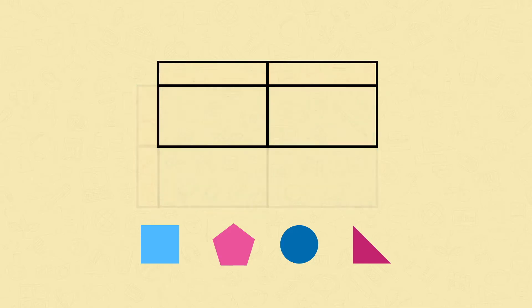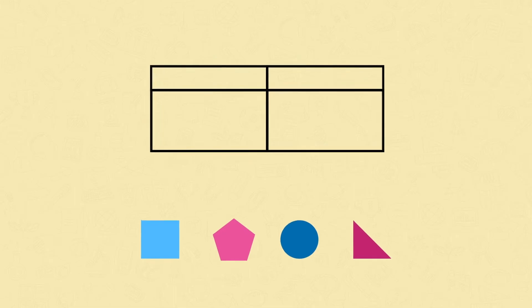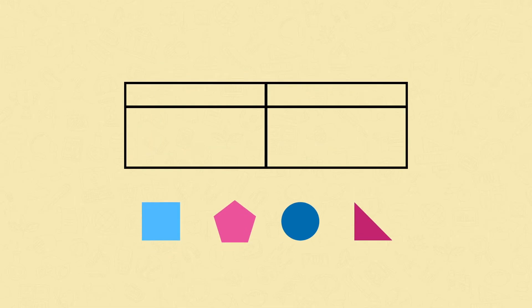Before we sort these shapes into this Carroll diagram, we'll start simply by sorting the shapes into two categories. Here we just need two main column headings: less than four sides and four or more sides.